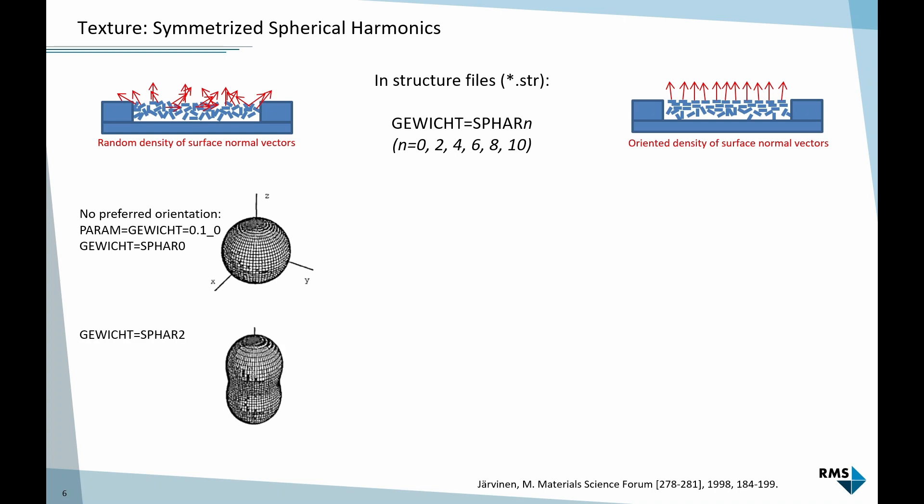If we set SPHAR to the second order, we allow one preferred orientation. For example, typically pointing up out of the surface of the sample, that's what I'm showing at the top right of the screen. We can refine a very simple texture model, just to model the situation when a lot of crystals are pointing up in this direction.